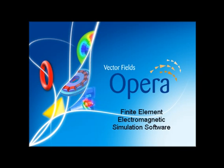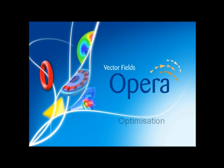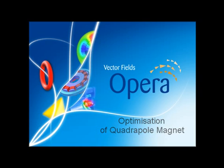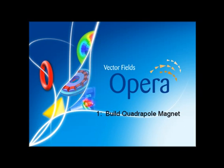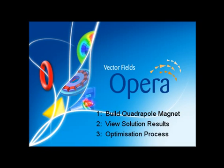The Vector Field's finite element electromagnetic simulation software can be used to optimize designs using the new powerful optimizer within the OPERA software framework. This is a demonstration of how the optimizer can be used to optimize the design of a quadrupole magnet. We will introduce and simulate a quadrupole magnet, examine aspects of its finite element solution within the OPERA software, then move on to the optimization process and display the results.